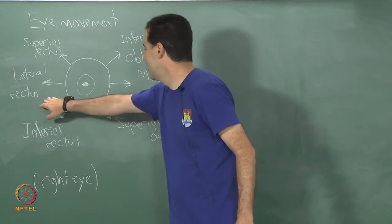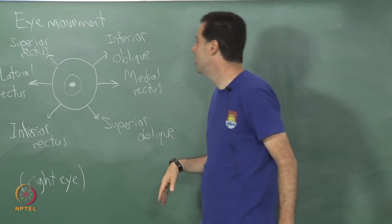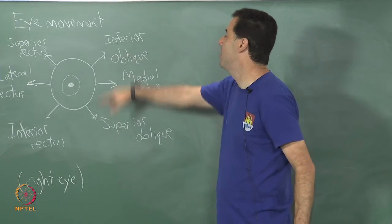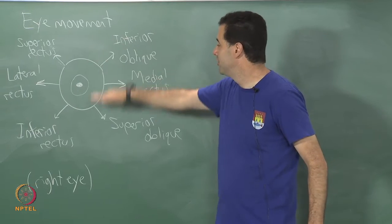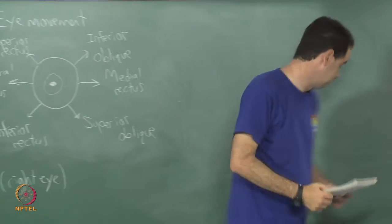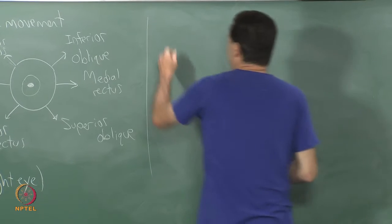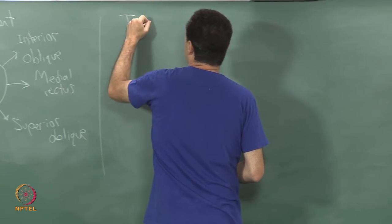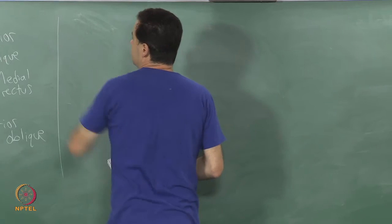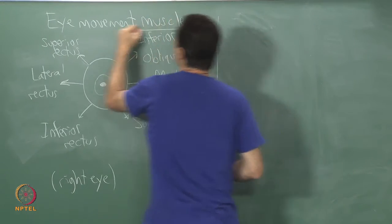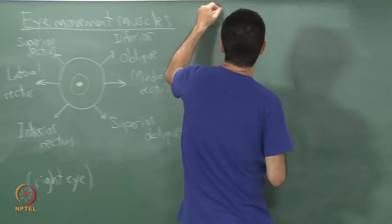So these two side ones lateral rectus and medial rectus are for yawing your eyes back and forth and for pitching up and down and a little bit of rolling these other four muscles are used. Types of eye movements. So eye movement let me put this one over here I call it eye movement muscles and then I will say types of eye movement.